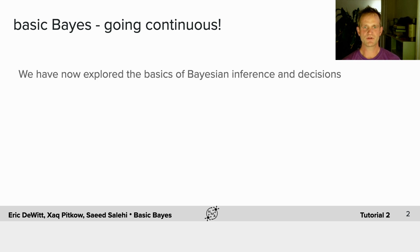We've now explored the basics of Bayesian inference and decisions. Everything you're going to see in this tutorial mirrors what you've already learned. So next, we're going to extend to continuous probability distributions.